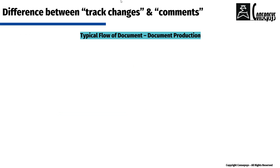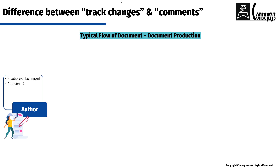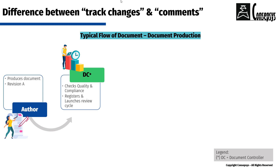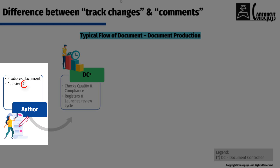To explain these two concepts we need to start from the typical flow of documents when it comes to the production of a document. It all starts with the author who produces a document and submits the first revision to document control — in this example, a revision A.